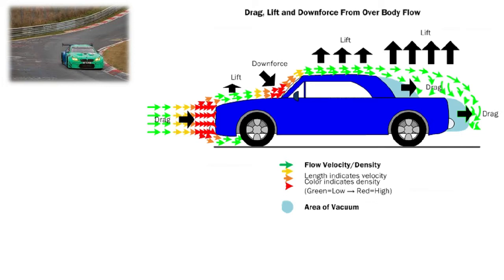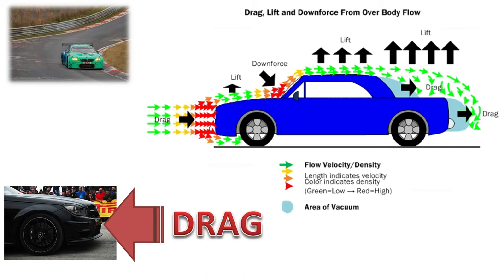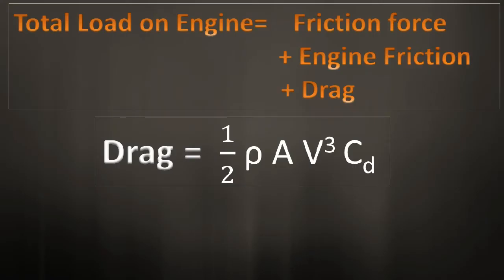To understand this, let's look at vehicle aerodynamics. When a vehicle moves on the road, there is airflow opposing the motion of the vehicle. This opposition is known as drag. As speed increases, this drag force increases. Drag also depends on the geometry of the vehicle. The total load on the engine is the sum of frictional forces, frictional losses in the engine, and drag force.